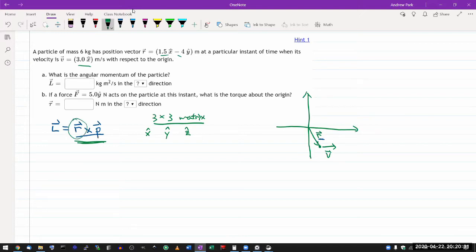In this case, it's r. So I have x component of r, y component of r, z component of r. And the last row is the second vector. So I have x component of momentum, y component of momentum, and z component of momentum.